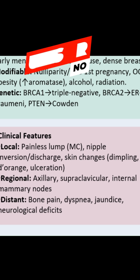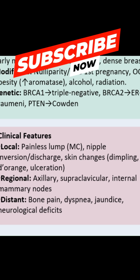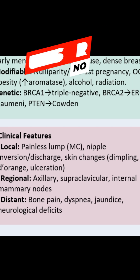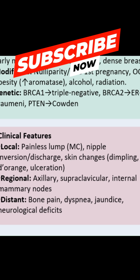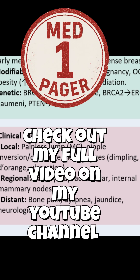Then we have peau d'orange, which basically means orange skin-like appearing of the breast. This is going to occur when the lymphatics are invaded by the cancer and then blocked — that is the lymphatics draining the skin. So when they are blocked, we can have a kind of edema, with fluid collecting within the skin, and that will appear like an orange skin peeling. Then we have ulceration.